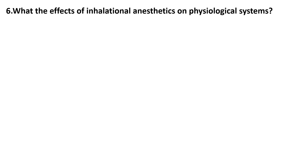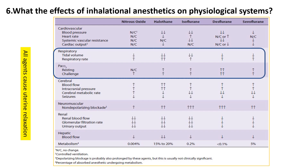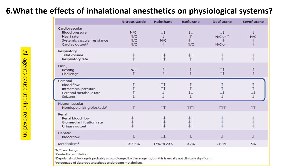What are the effects of inhalational anesthetics on physiological systems? Cardiovascularly, they significantly decrease blood pressure through vasodilation and myocardial depression, while nitrous oxide maintains stable pressures. Heart rate responses differ, with isoflurane and desflurane increasing rate via baroreceptor reflexes, halothane decreasing it through vagal stimulation, and sevoflurane showing minimal change. Respiratory effects include dose-dependent tidal volume reduction and compensatory respiratory rate increases, most pronounced with halothane, along with elevated arterial carbon dioxide levels particularly with desflurane. Cerebral impacts involve increased blood flow and intracranial pressure across all agents, with isoflurane, desflurane, and sevoflurane providing the greatest reduction in cerebral metabolic rate.